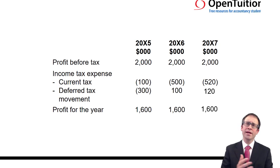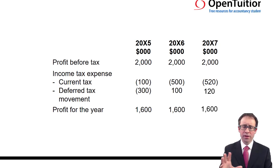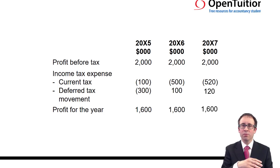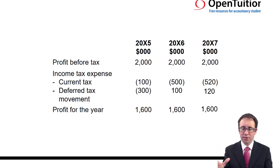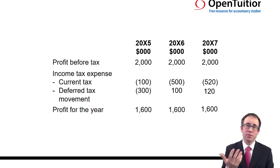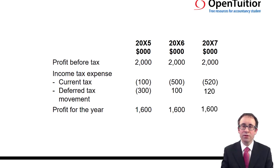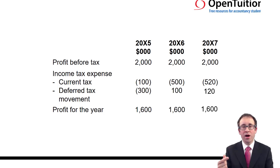Obviously it gets more complicated in the real world, because there are loads of different assets subject to deferred tax, and likewise liabilities subject to deferred tax — but we'll save that for later. Also, the profits before tax won't be the same every year, but deferred tax will ensure that the earnings figure is reflective of the changes in accounting profits.